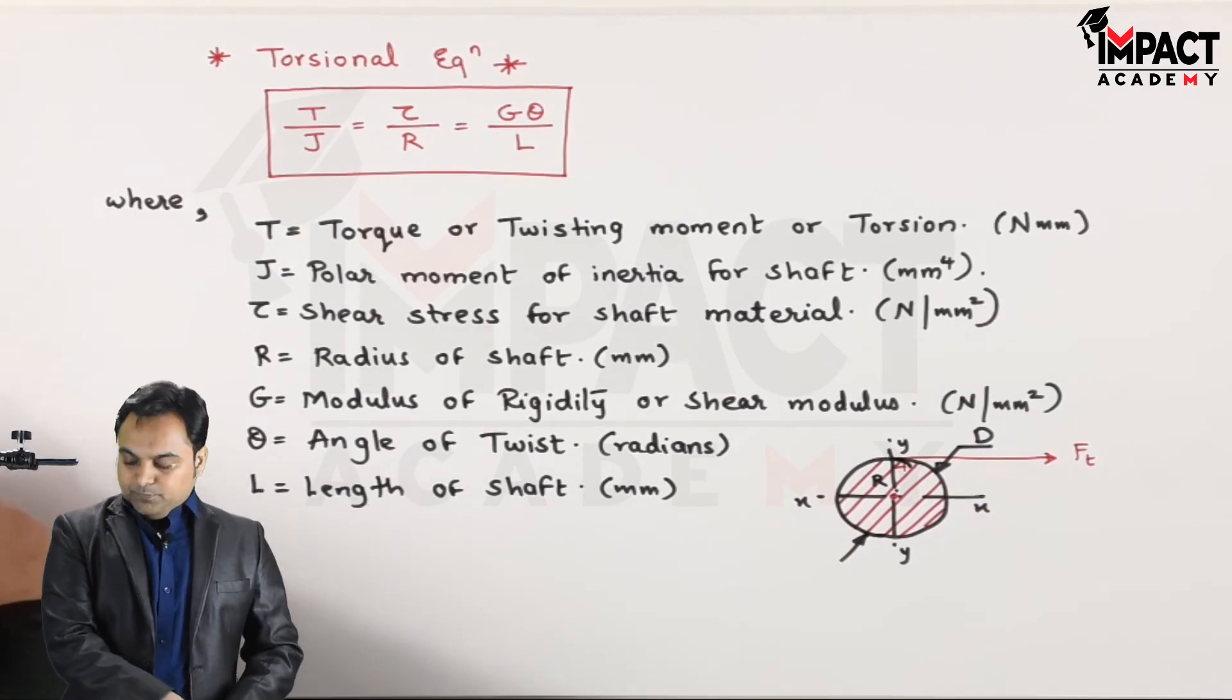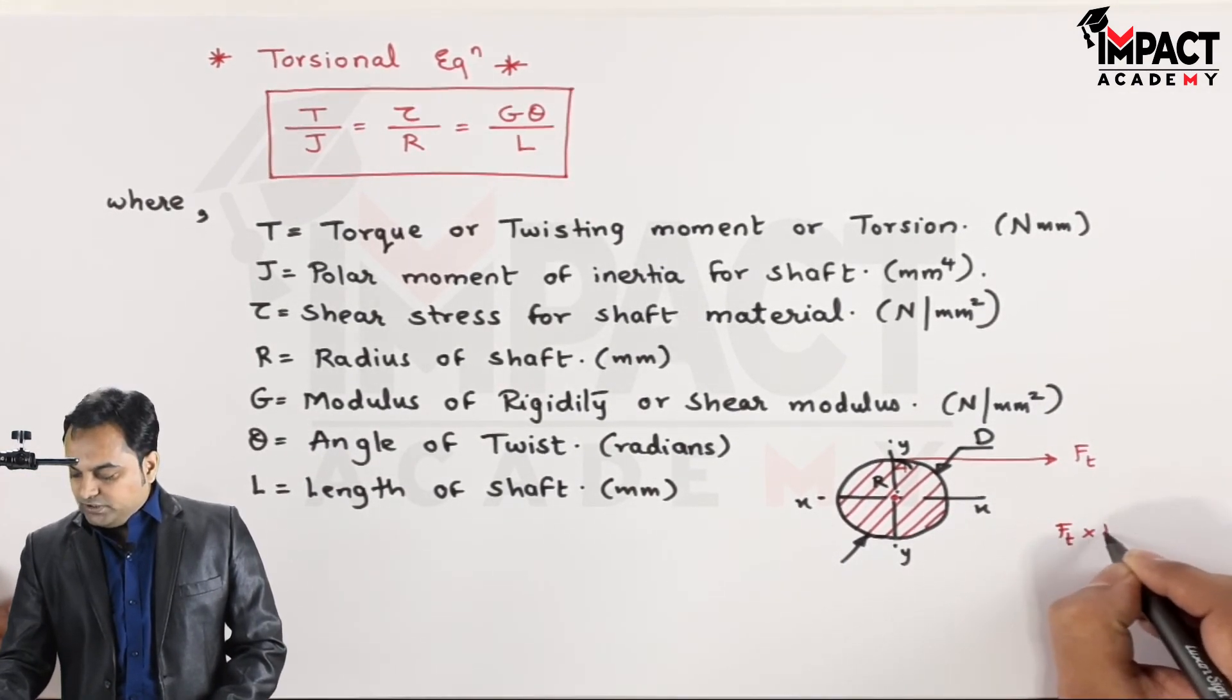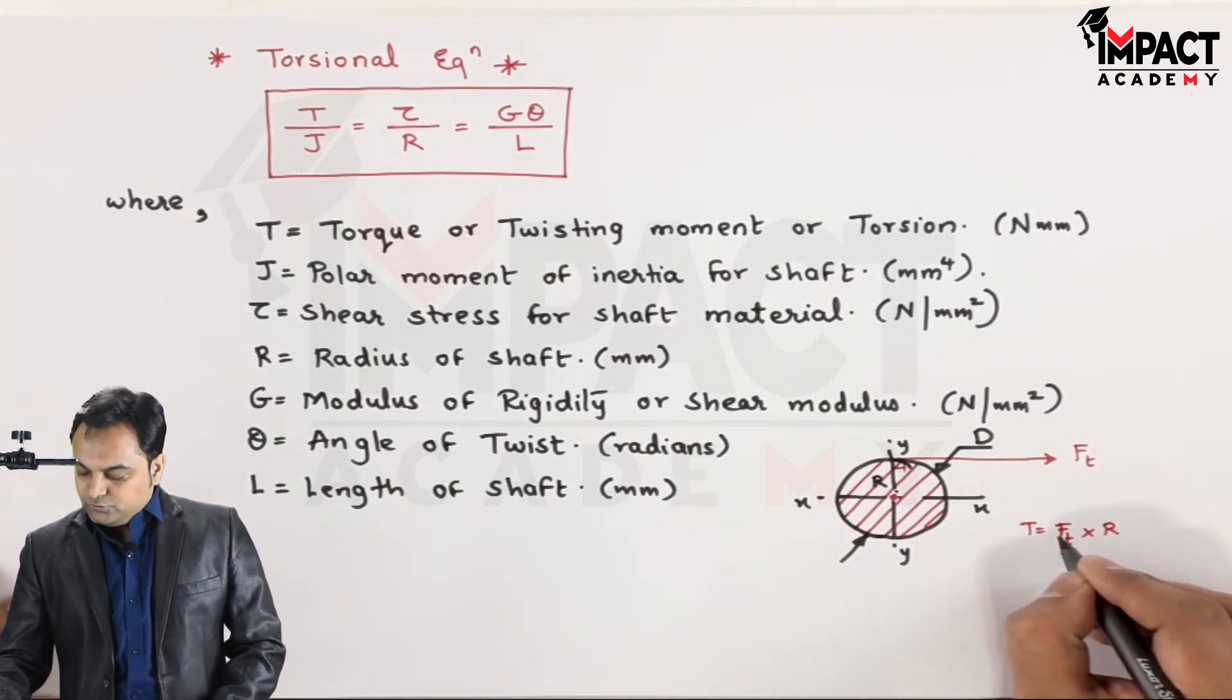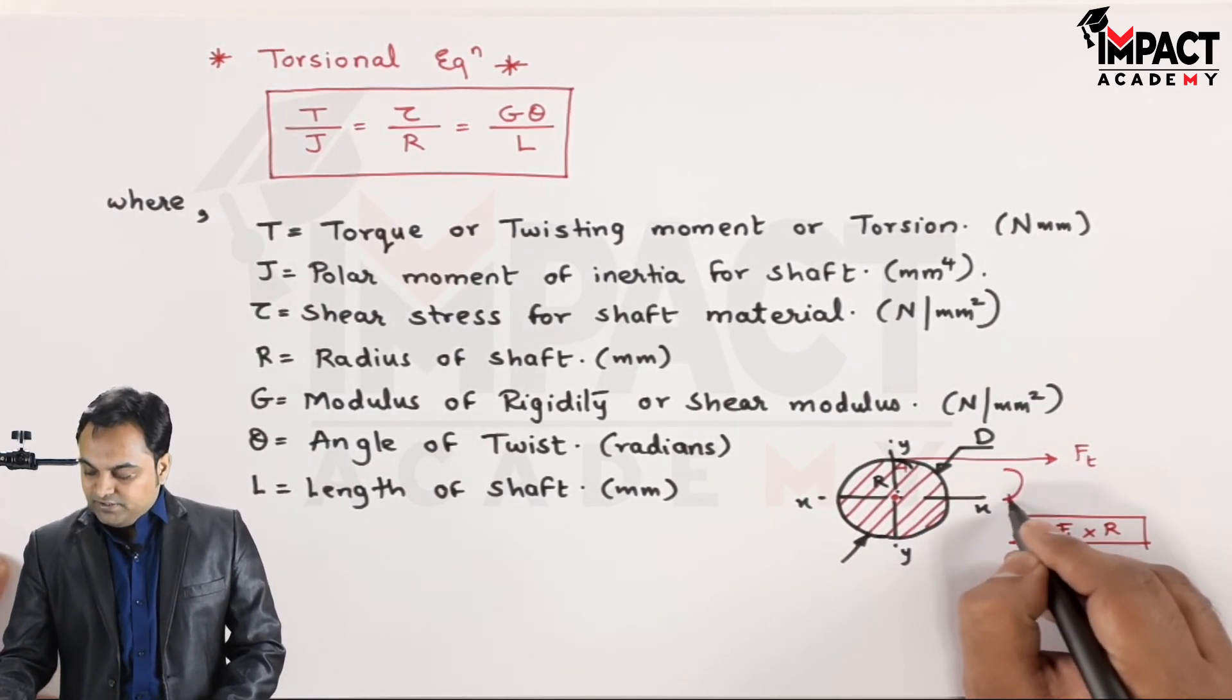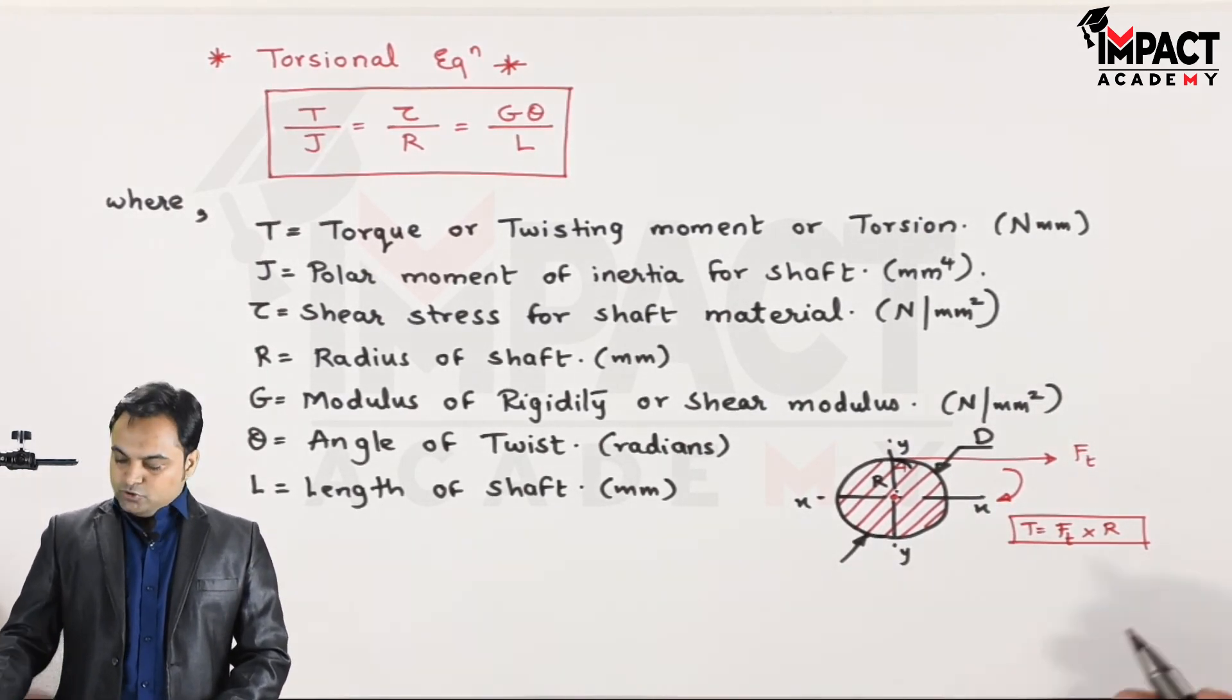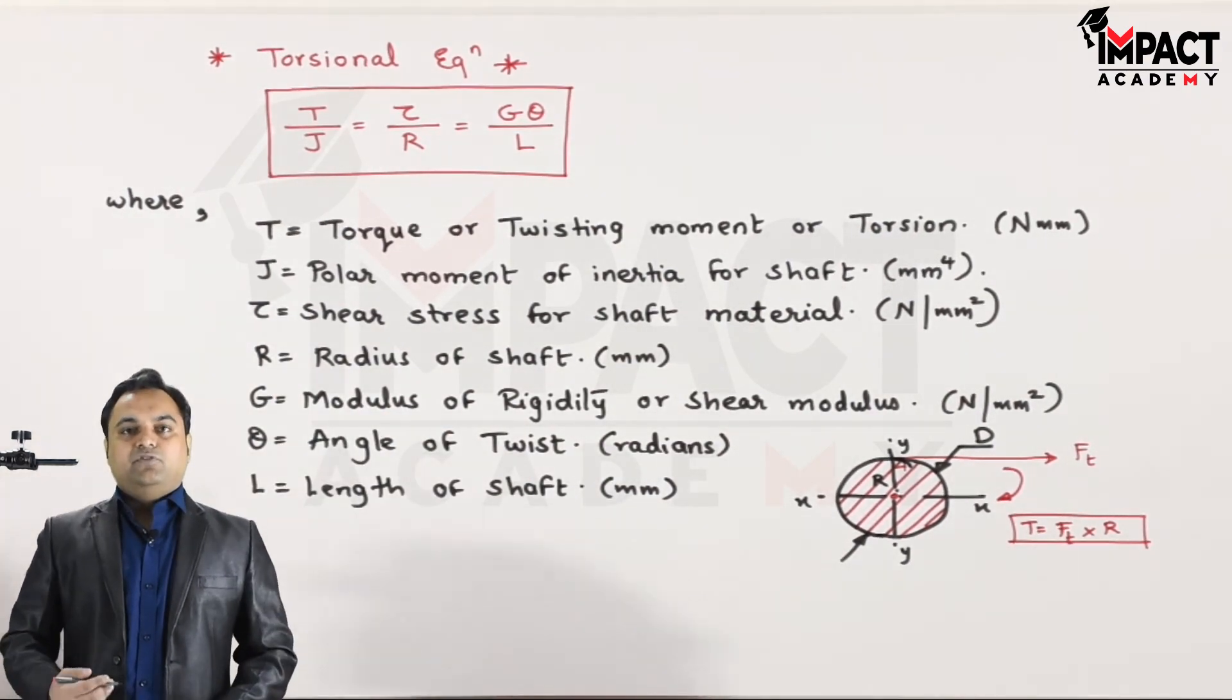From the center up to the topmost fiber the radius is capital R, so the product of tangential force into the radius of the shaft is called as the torque or the twisting moment. And when I take the moment of this FT about the center of the shaft, that will result in a clockwise rotation or torque. So that is the meaning of T.